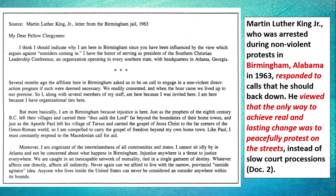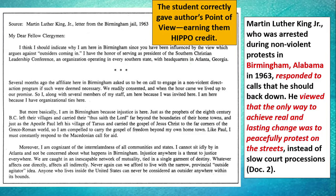Document two is a 1963 Martin Luther King letter from a Birmingham jail — we actually read this in class. The student writes that King, who was arrested during non-violent protests in Birmingham in 1963, responded to calls that he should back down. He viewed that the only real way to achieve lasting change was to peacefully protest in the streets instead of slow court processions. So this student is giving the author's point of view — this is one of the P's in HIPPO — and they would get credit for that. On a DBQ you need to do this for at least three documents; I'd suggest doing it for four to ensure you get that point.